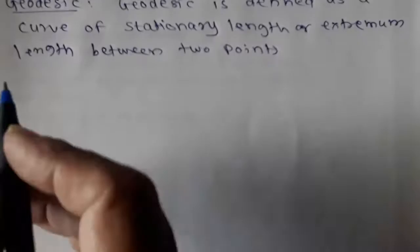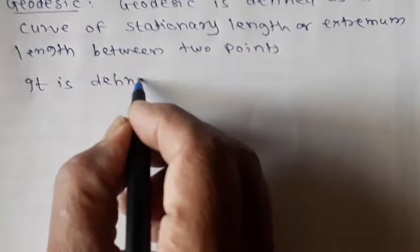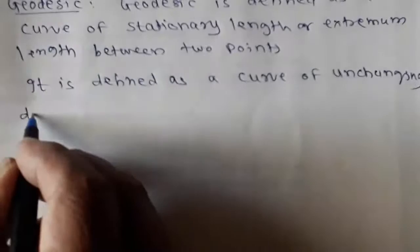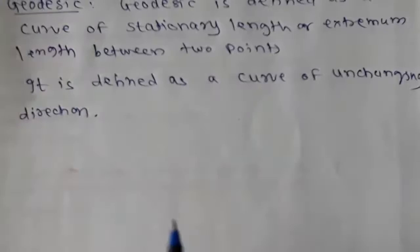Alternatively, it is also defined as a curve of unchanging direction. Now, we shall go to examples.